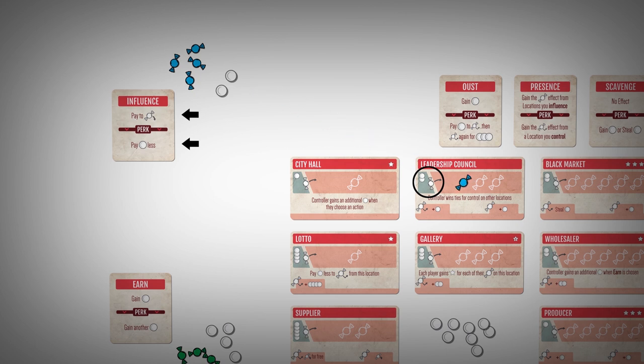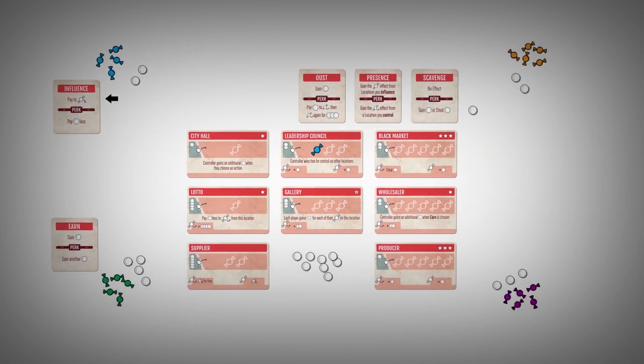By using this action, you can control a location and gain its special ability. A player is considered in control of a location if they have the most influence tokens on it. If more than one player is tied for the most influence, then no player controls it.